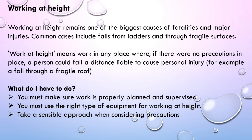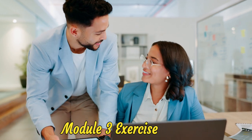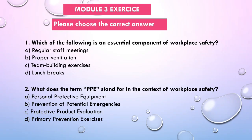You must make sure work at height is properly planned and supervised. Use the right type of equipment and take a sensible approach when considering precautions. Now let's check our knowledge for Module 3. Question 1: Which of the following is an essential component of workplace safety? A) Regular staff meetings, B) Proper ventilation, C) Team building exercises, D) Lunch breaks. Question 2: What does PPE stand for? A) Personal Protective Equipment, B) Prevention of Potential Emergencies, C) Protective Product Evaluation, D) Primary Prevention Exercise.